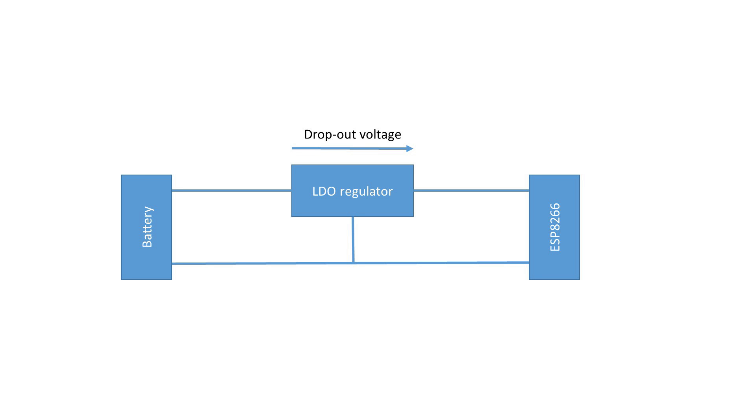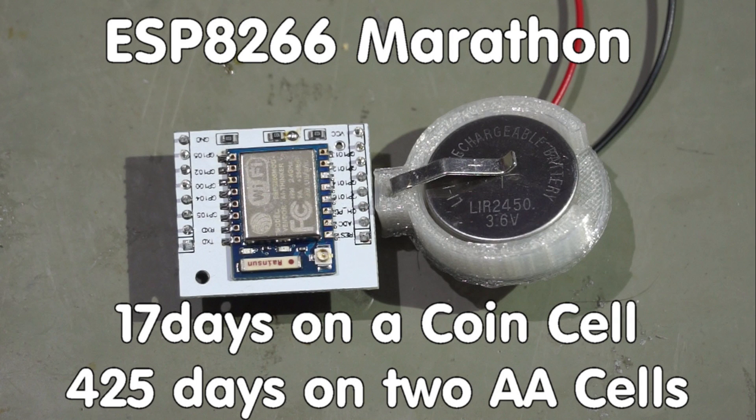And at the end of the life, the regulator shortens the useful voltage range because it always needs the dropout voltage. So, the overall loss capacity is in the range of 20%. If you want to learn more about LDO regulators, you can watch my video number 58.